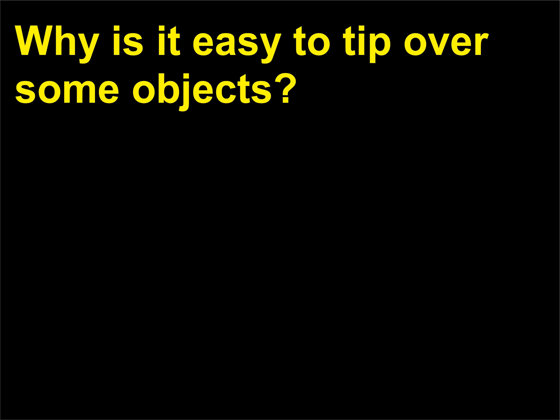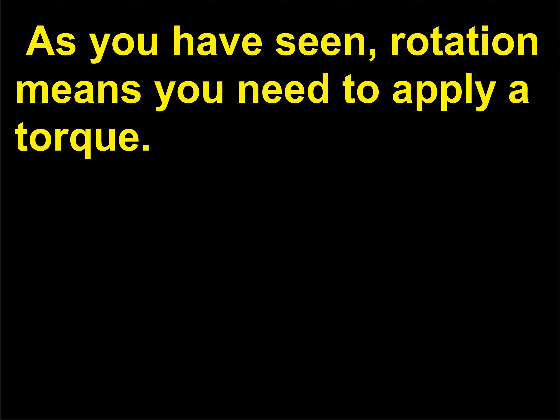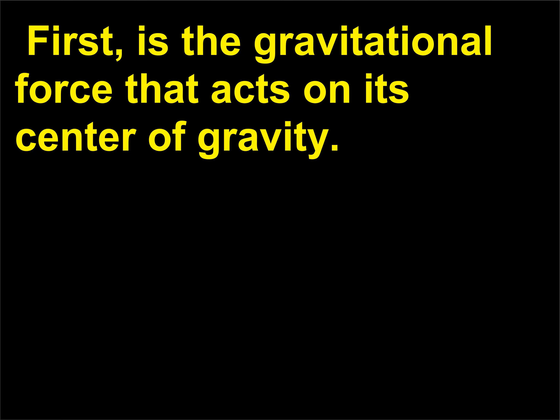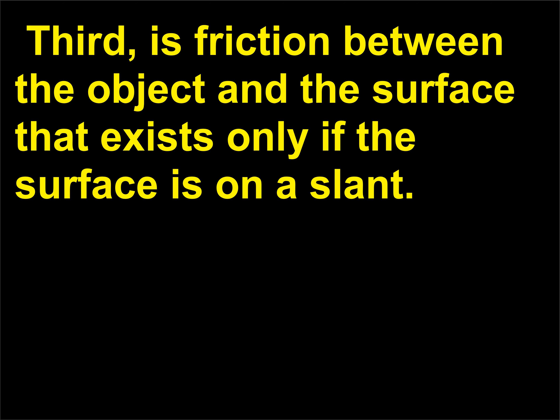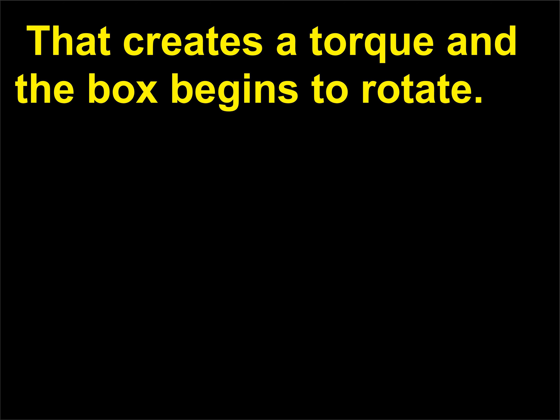Why is it easy to tip over some objects? If you want to tip something over, you have to rotate it, which means you need to apply a torque. An object sitting on a surface has several forces on it: the gravitational force acting on its center of gravity, the upward force of the surface, and friction between the object and the surface that exists only if the surface is on a slant. If you exert a sideways force near the top of a box, that creates a torque and the box begins to rotate.